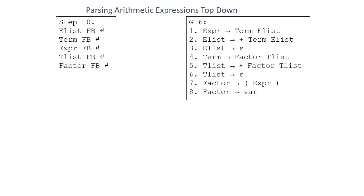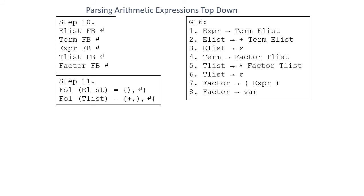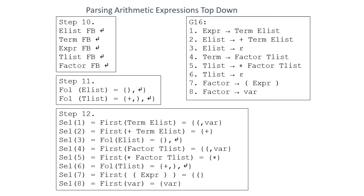Step 10: we extend the FB relation with the FBN marker. Step 11: we find the follow set for nullable non-terminals — ELIST and TLIST. Finally, step 12 gives us the selection set for all the rules.